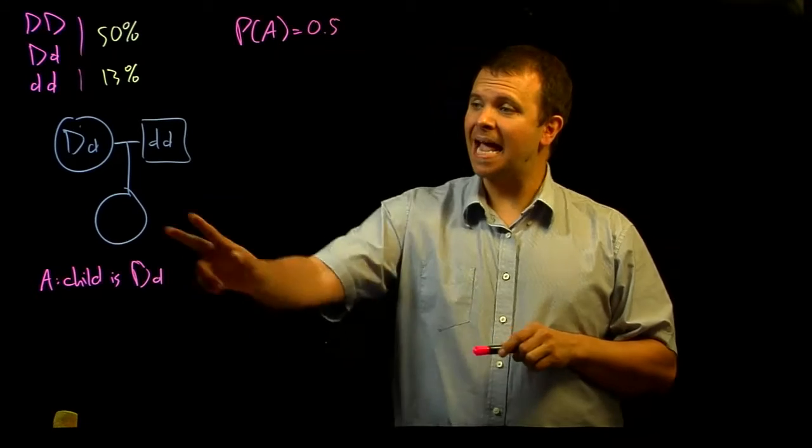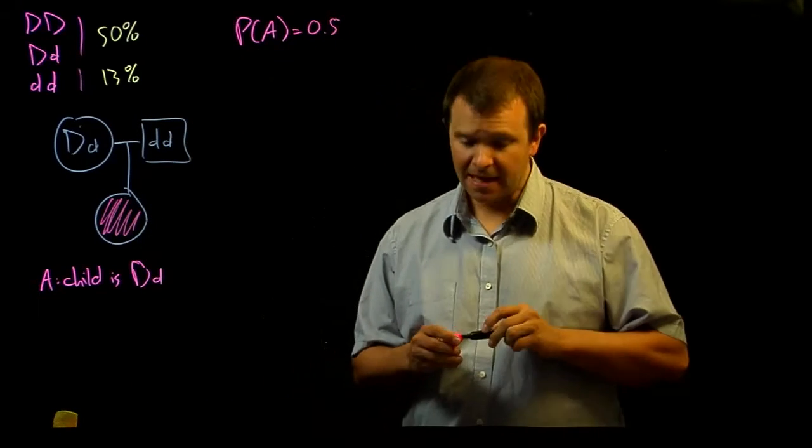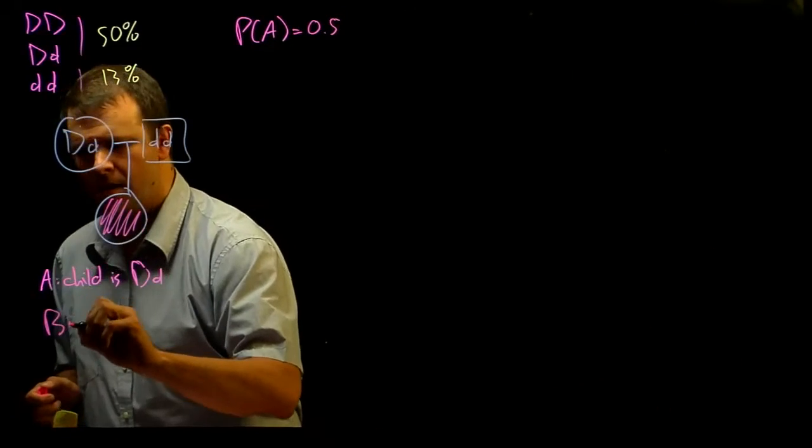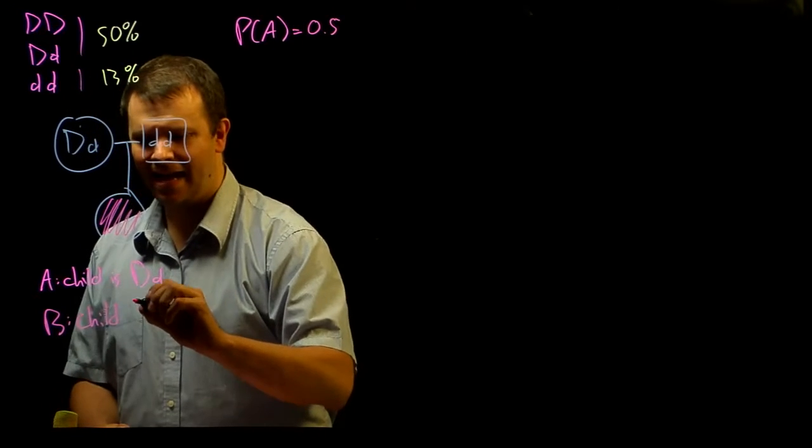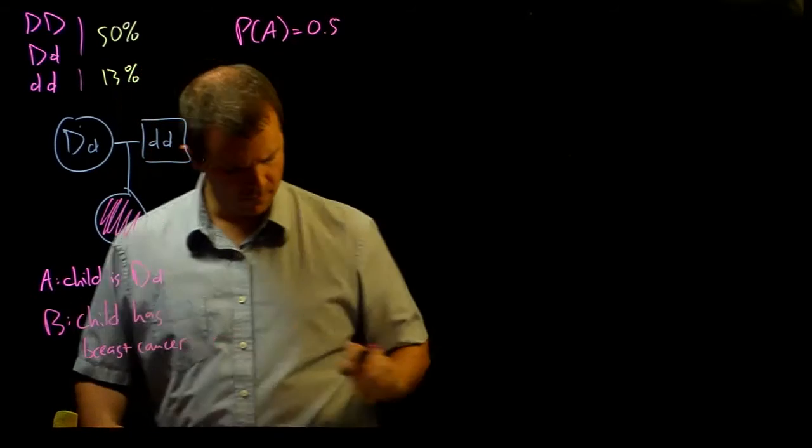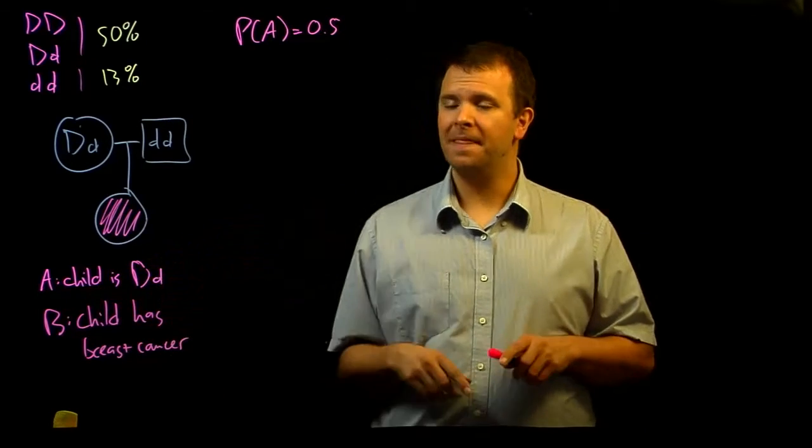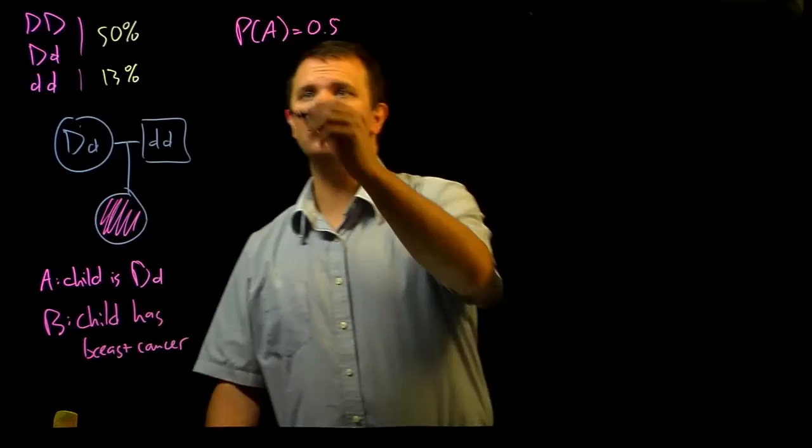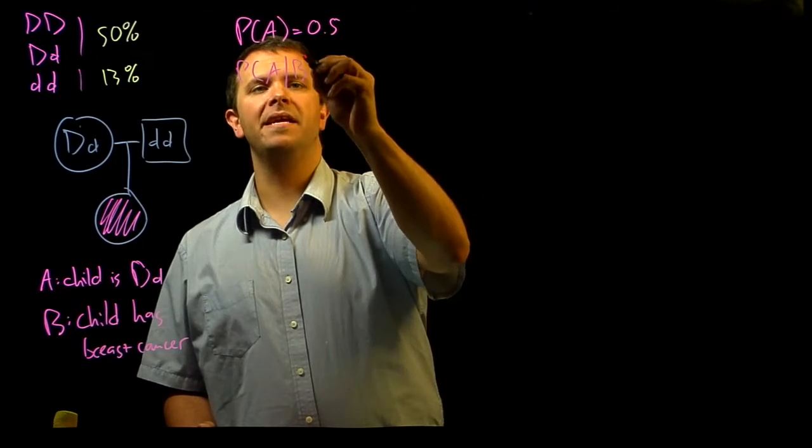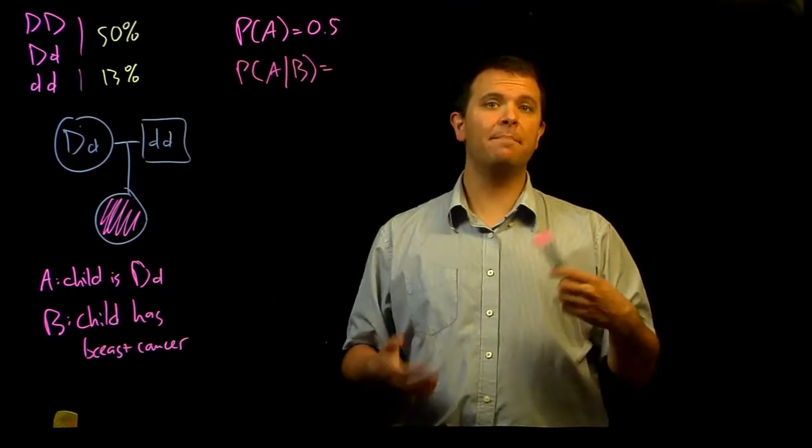However, let's say that the child eventually develops breast cancer. Now, we have some additional information. If the event B is that the child has breast cancer, then what is the probability that their genotype is heterozygote given this new information? So, there are actually two ways to answer this question. And so, we're going to take both of them in turn.